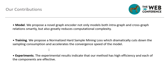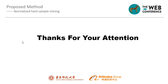In summary, our contributions can be summarized in three aspects. For the model, we propose a novel graph encoder that models both intra-graph and cross-graph relations smartly while greatly reducing computational complexity. For training, we propose a normalized hard sample mining loss that dramatically cuts down sampling cost and accelerates convergence. For experiments, results indicate that our method has high efficiency and each component is effective. Thank you for your attention.